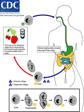In the apicomplexan life cycle, the trophozoite undergoes schizogony, asexual reproduction, and develops into a schizont which contains merozoites.